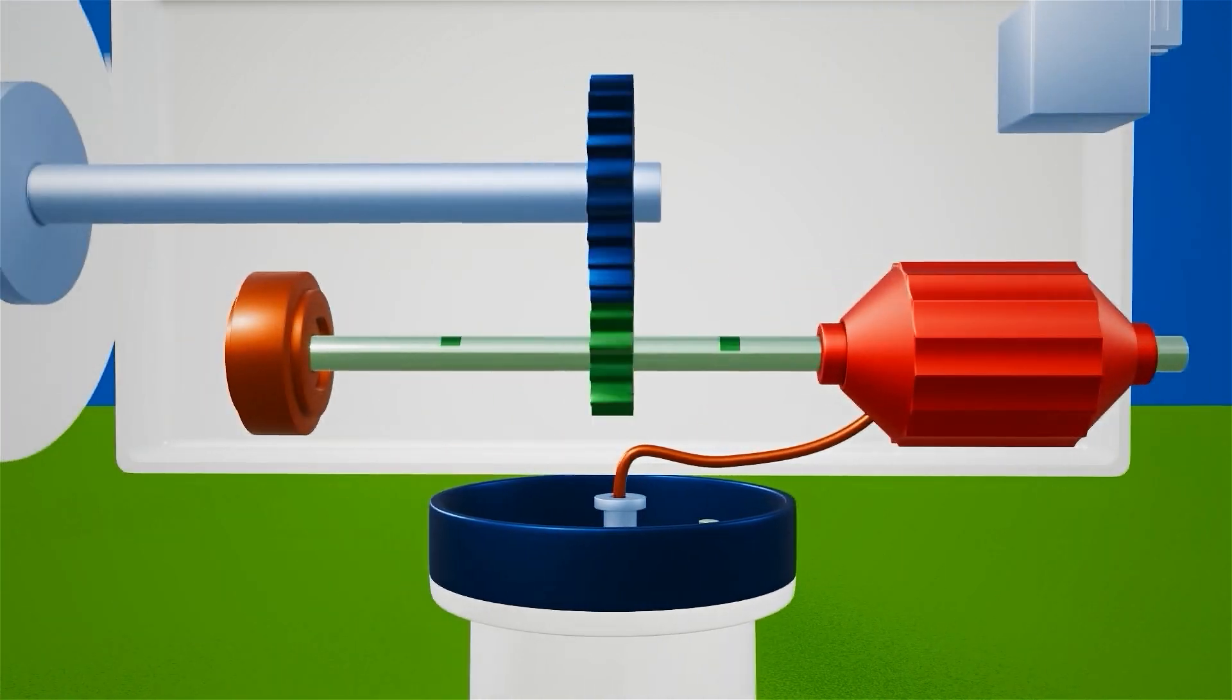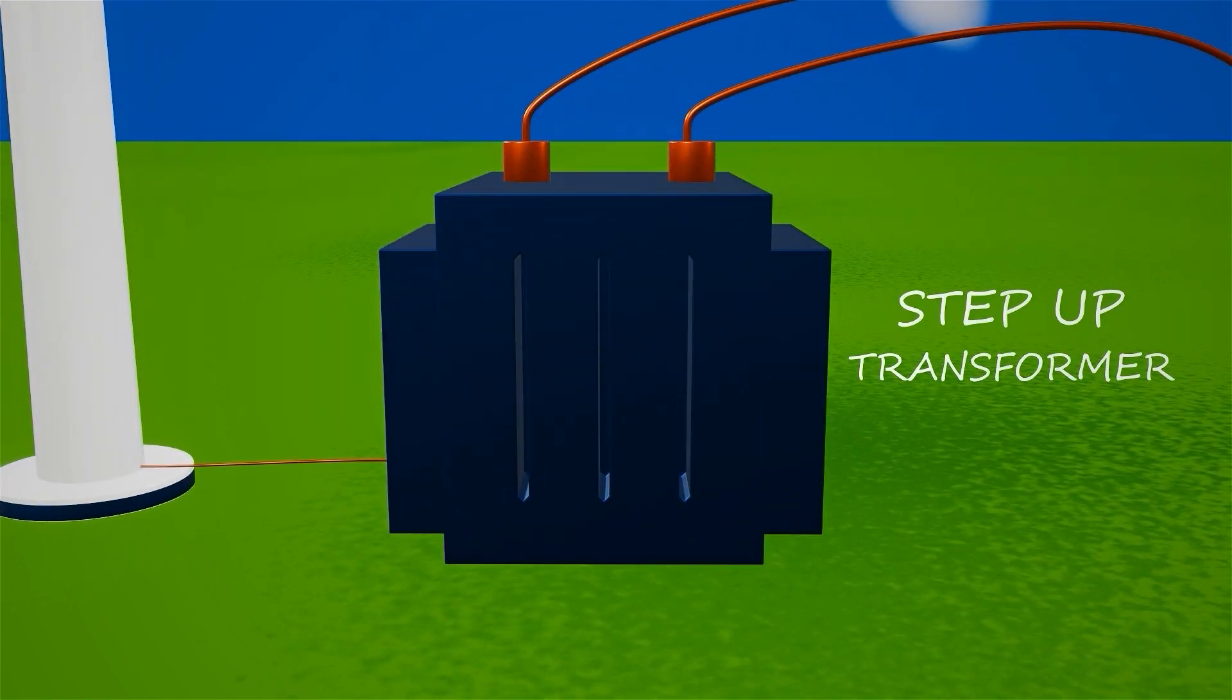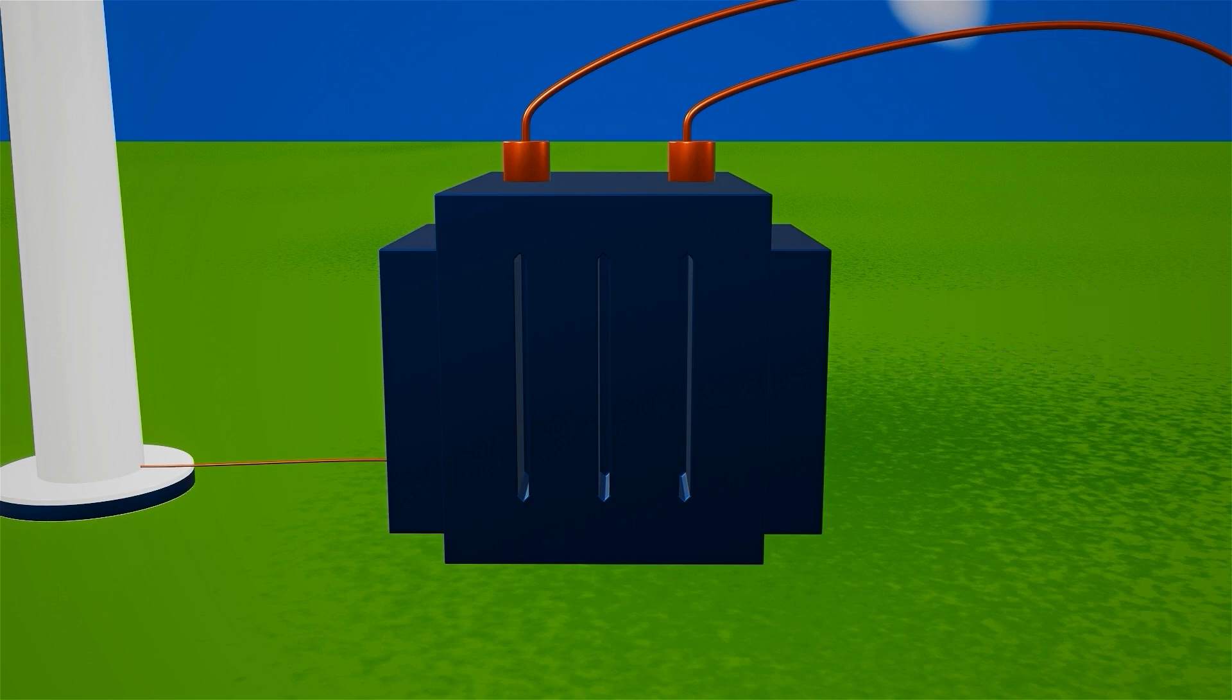The electricity generated is then transmitted to a step-up transformer through a power cable inside the turbine pole. The transformer significantly increases the voltage of the electricity generated by the generator before integrating it into the power grid via cables.